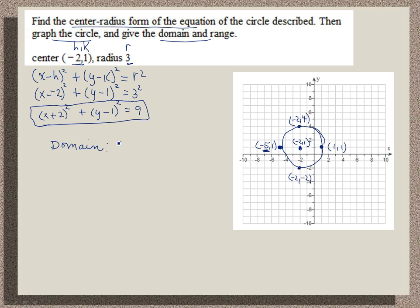My domain starts at negative 5. And then reading to the right, my rightmost point has an x value of 1.